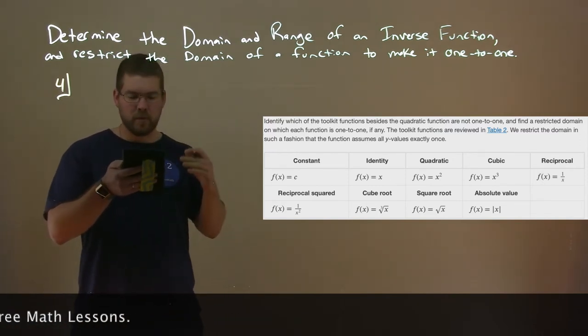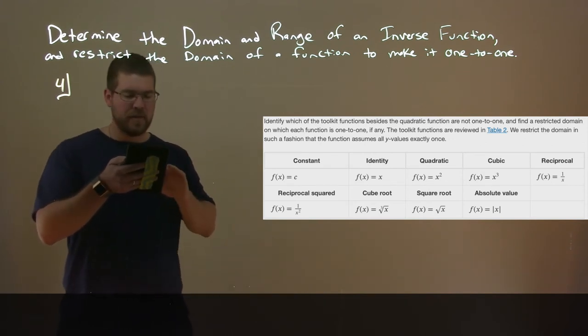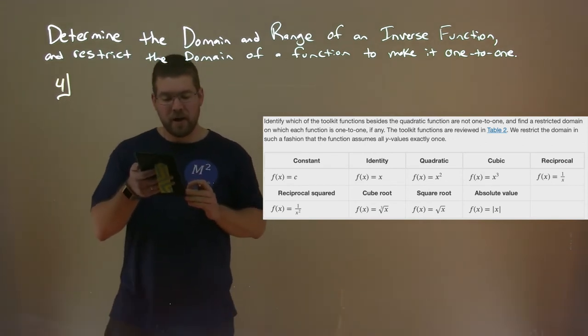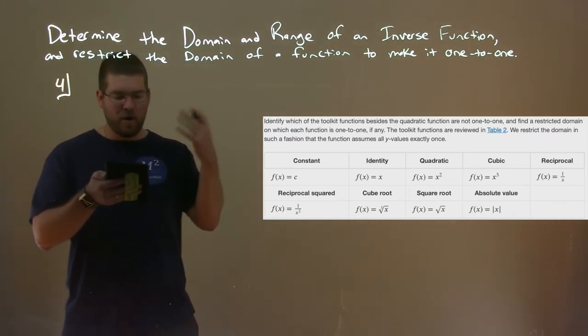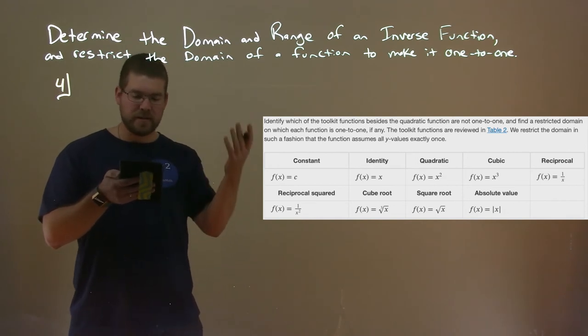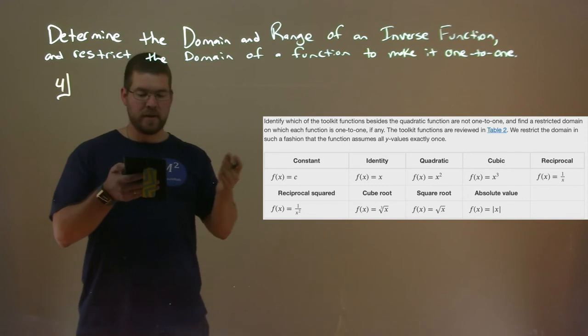The toolkit functions were reviewed before. We restrict the domain in such a fashion that the function assumes all y values exactly once. We can see our toolkit functions right there, all of them listed out: the constant, identity, quadratic, cubic, reciprocal, reciprocal squared, cube root, square root, and absolute value.